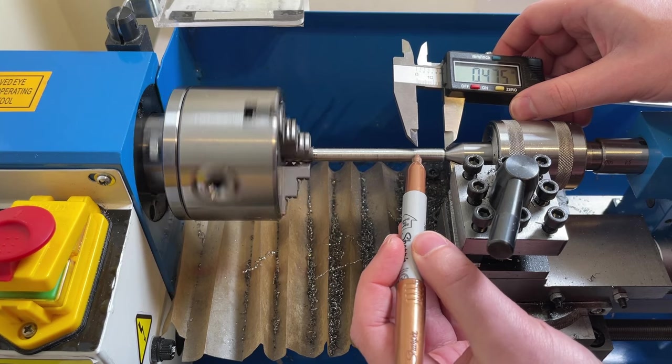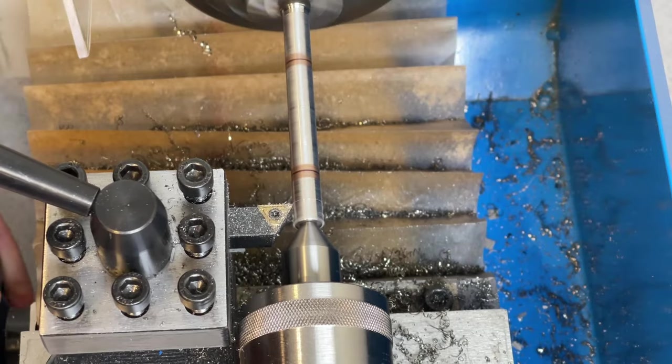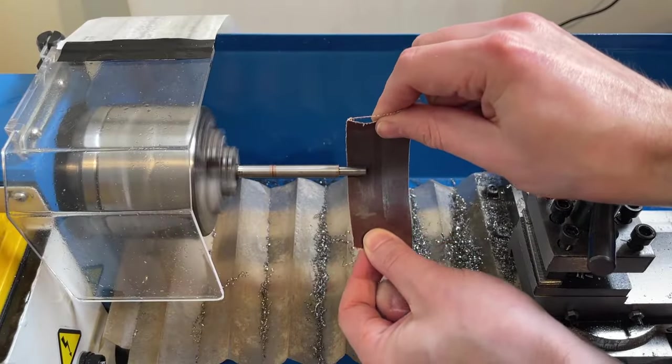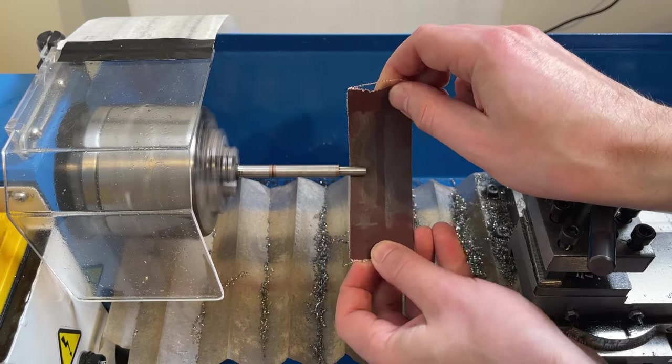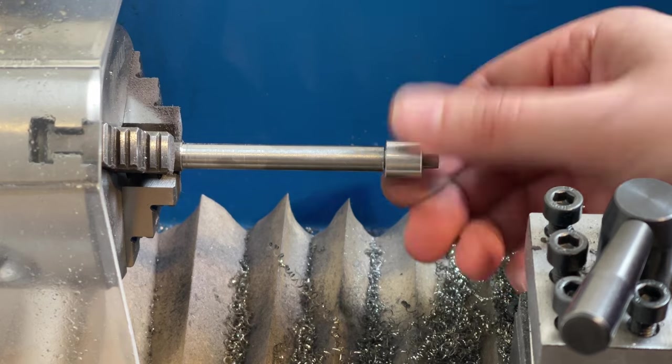Now that our surface finish doesn't look like garbage, we can begin to do the oh so familiar mark, cut, measure, and repeat to get all our features in place. I got as close as I could before the carbide cutters refused to work, and then finished up the final few thousandths with some emery cloth. Nice.